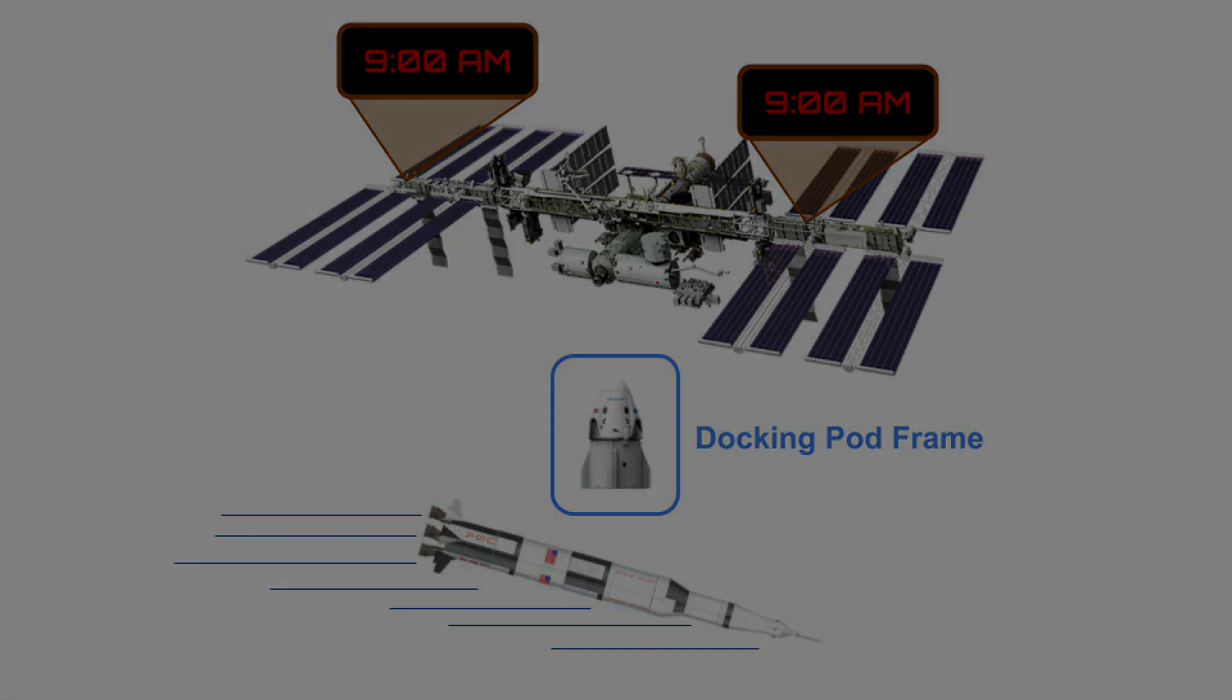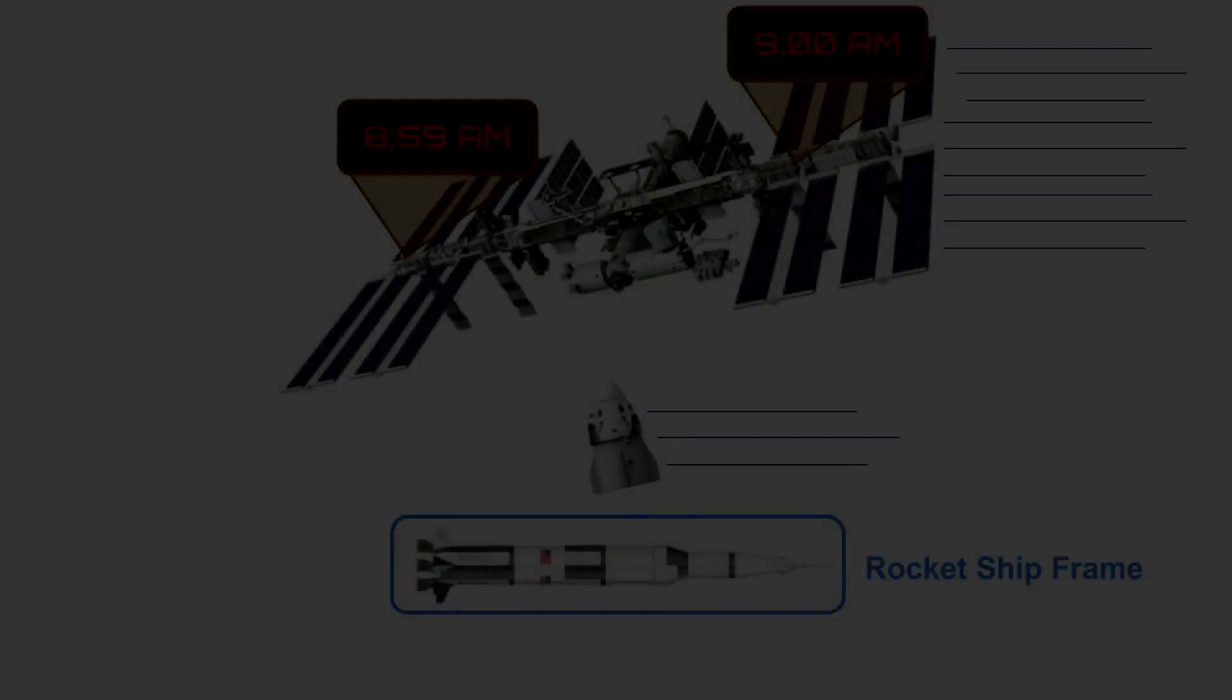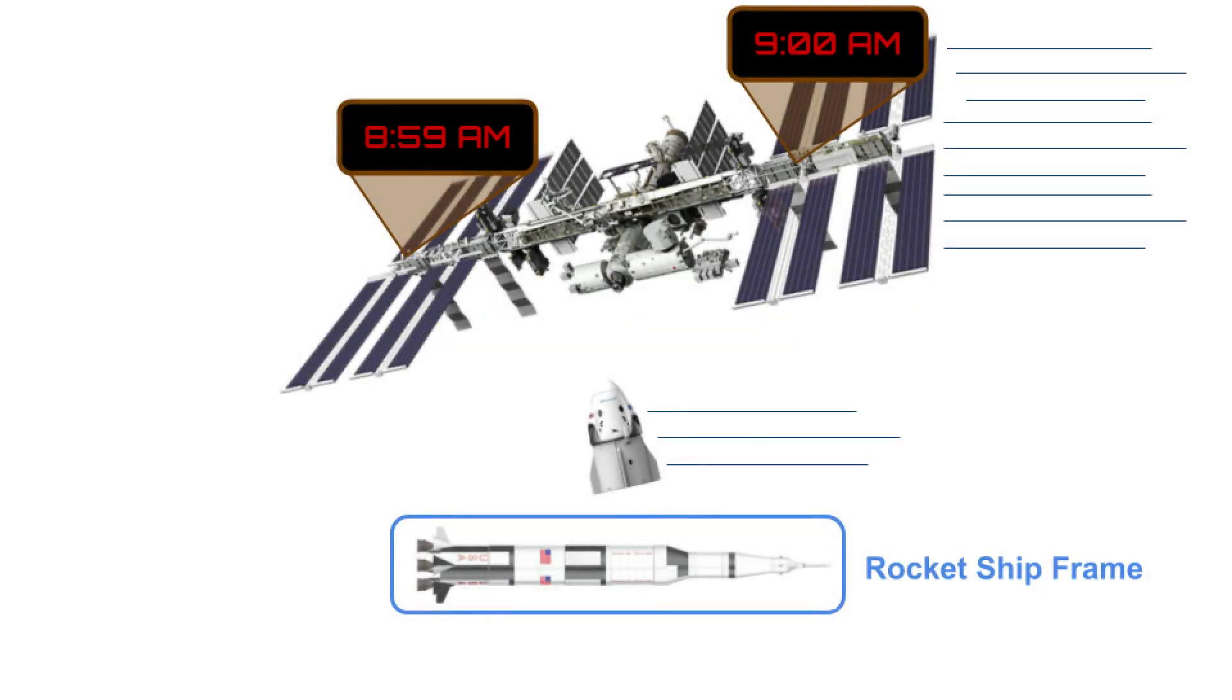From the rocket ship's frame, it is at rest while the station and docking pod fly by in the opposite direction. In this frame, the station and pod are rotated in spacetime. Accordingly, the rocket ship sees the clocks as desynchronized, the clock on the right strikes 9am before the clock on the left.